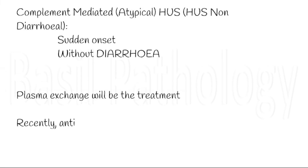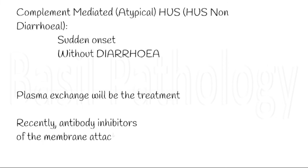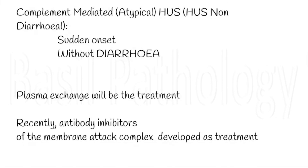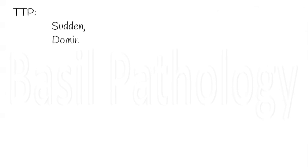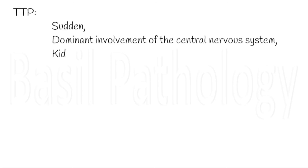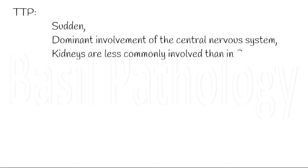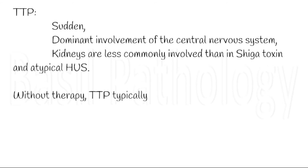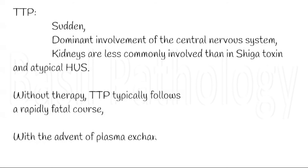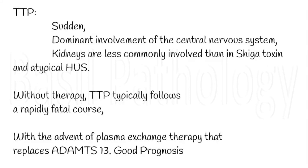Plasma exchange and antibody to the membrane attack complex are now developed as treatment of choice for atypical HUS. TTP, thrombotic thrombocytopenic purpura, is also sudden in onset and mainly involves the central nervous system first, then the kidneys. The kidneys are less commonly involved than in previous thrombotic microangiopathies. It has a rapid fatal outcome. Plasma exchange that replaces ADAMTS13 protein is a promising treatment for TTP.